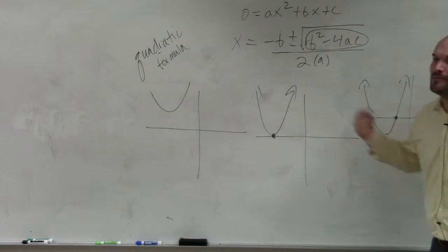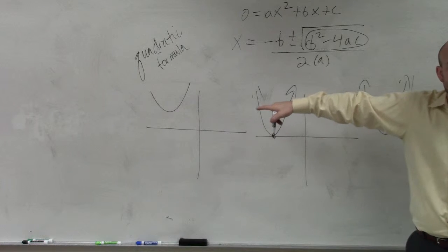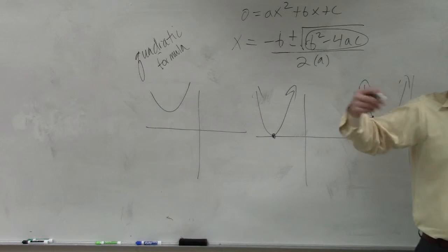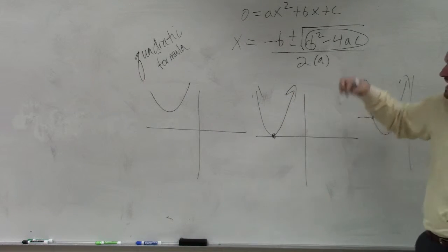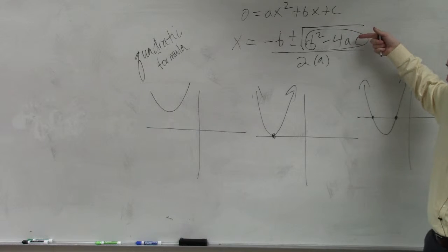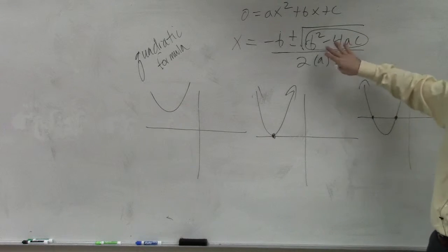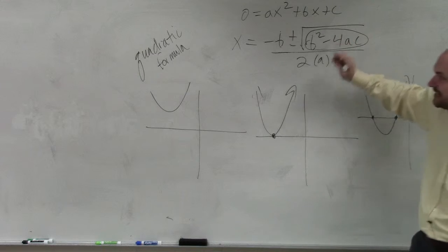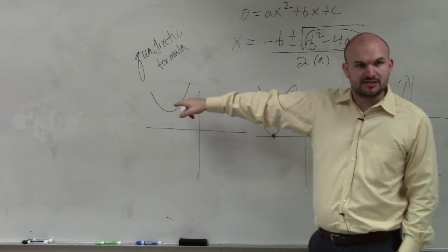So let's think about this. Remember what we said? What was the first thing on your notes? I said, if your discriminant is negative, there's no real solutions. Is it possible to take the square root of a negative number? No. So that's why when your discriminant's negative, you have no solutions.